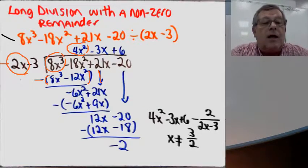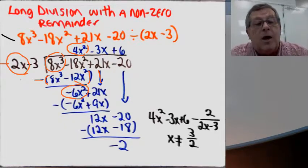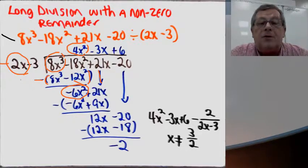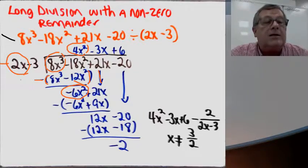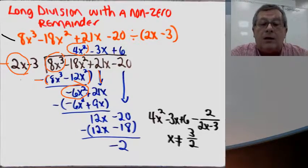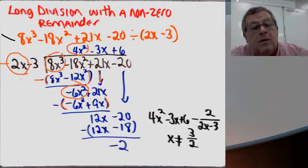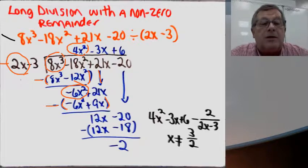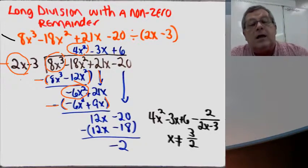I bring down 21x, so now I've got minus 6x squared plus 21x. Focusing only on the lead terms, how many times will 2x go into minus 6x squared? That's minus 3x. I put minus 3x in the quotient above the 21x in the dividend. Now I multiply minus 3x times the divisor: minus 3x times 2x gives minus 6x squared, and minus 3x times minus 3 gives plus 9x. I put those in parentheses with a minus sign out front, change signs, and minus 6x squared plus 6x squared is 0, and 21x minus 9x is 12x.